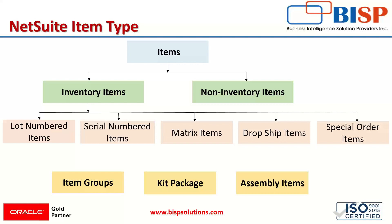The last category under inventory items is the special order item. It can be used to track items that might not follow regular inventory processing. These items are used to fulfill specific or rare orders, like just-in-time orders or orders for customized items. So special order items are used for fulfilling some specific orders only.